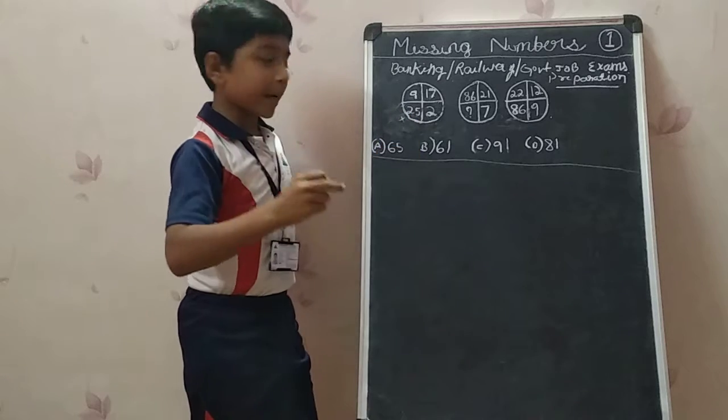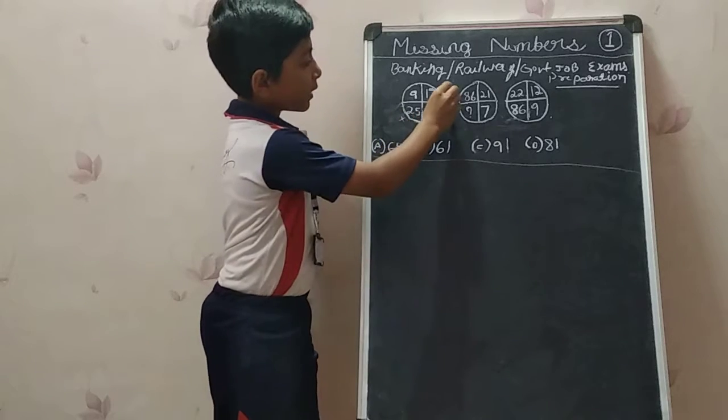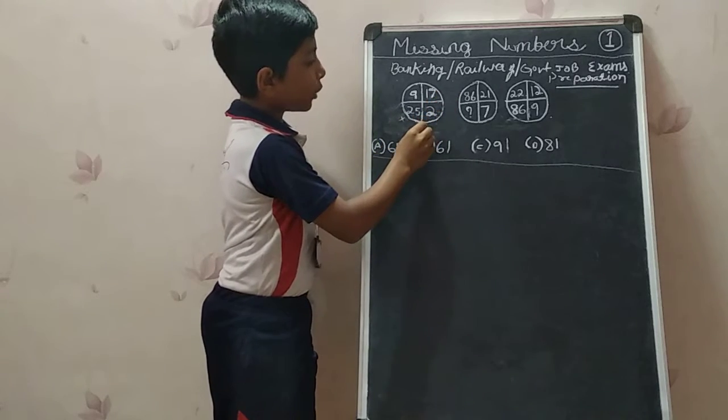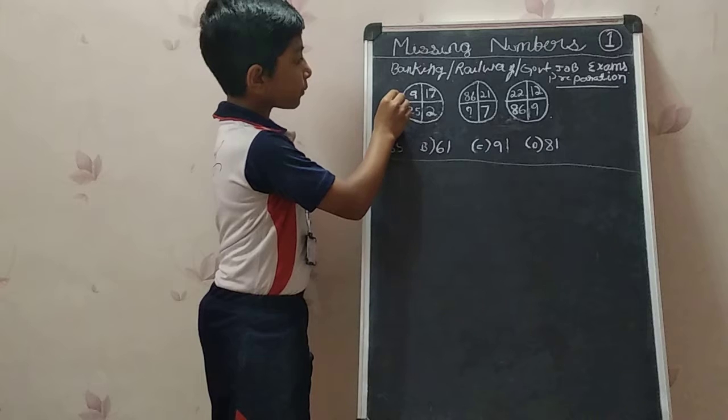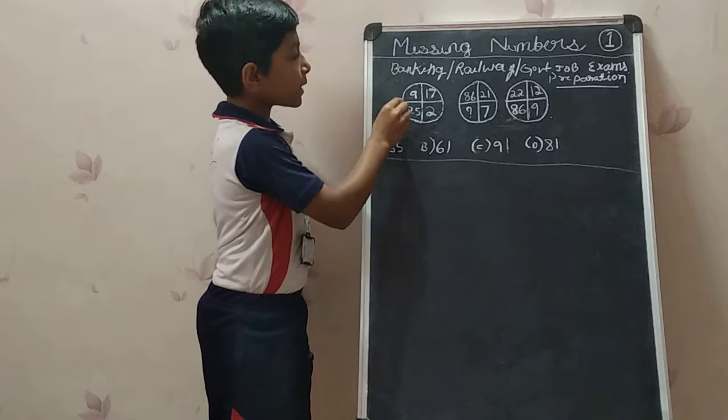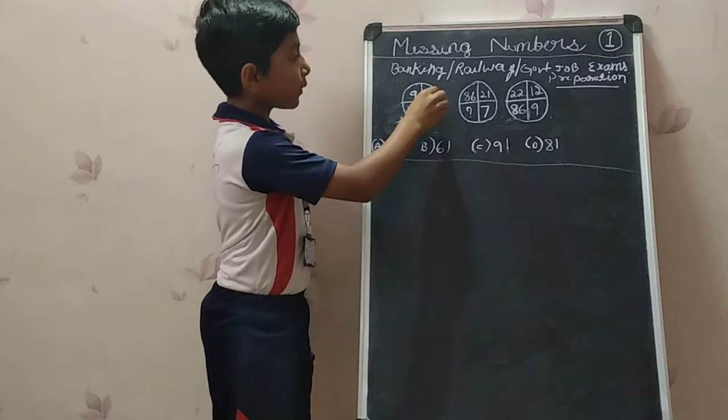Let us try multiply and adding: 17 into 2 equals 34, plus 9 equals 43. It is not coming.